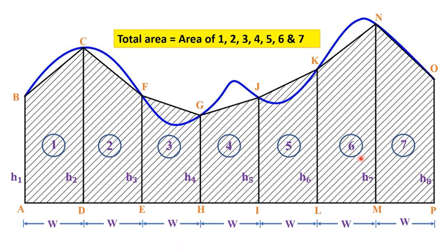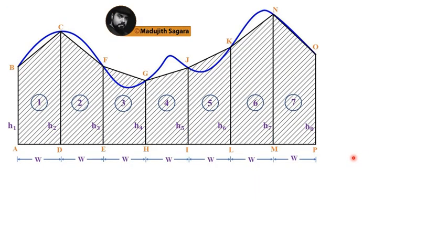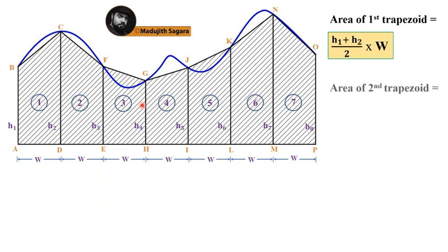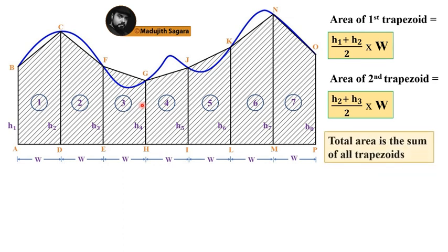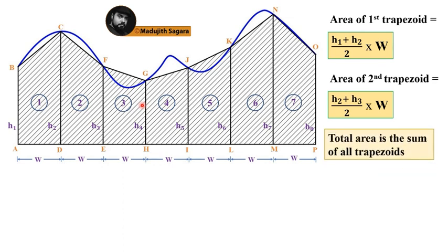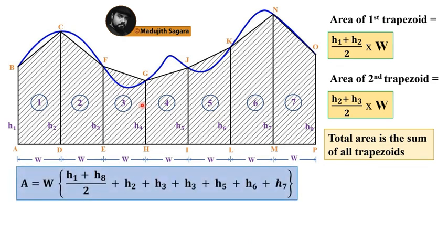That is the thing. Now we will directly go to the trapezoidal rule calculation. Here this is the picture I am going to use. You can see area of first trapezoid is (h1 + h2) divided by 2 times W. Area of second trapezoid is (h2 + h3) divided by 2 times W.